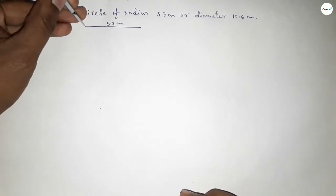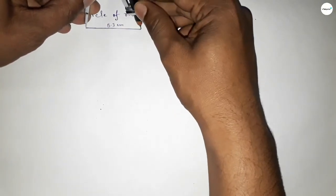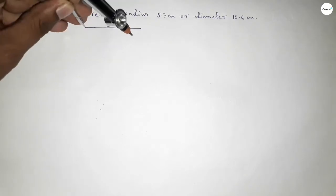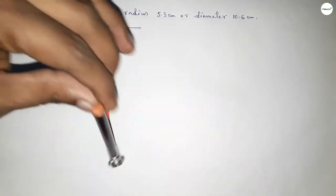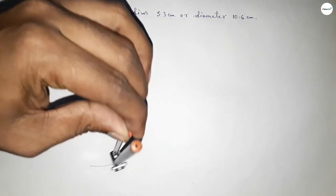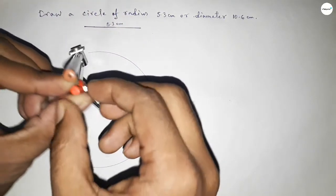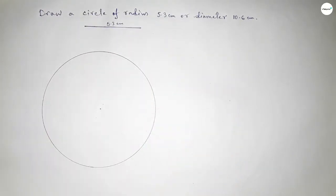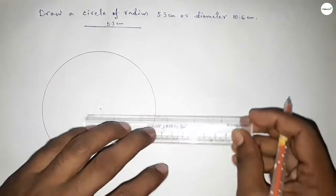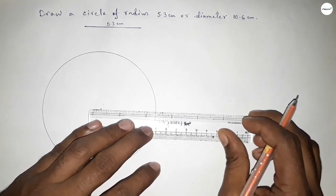Taking the length 5.3 centimeter by using compass and putting the compass on the point, now drawing here an arc which represents a circle with radius 5.3 centimeter.